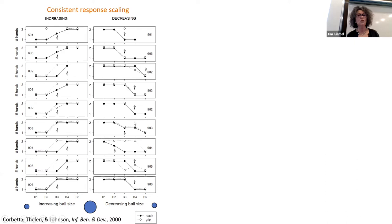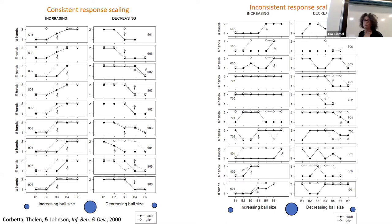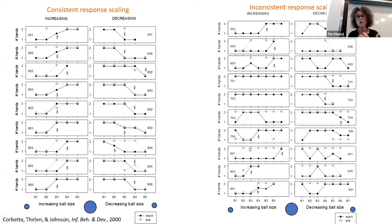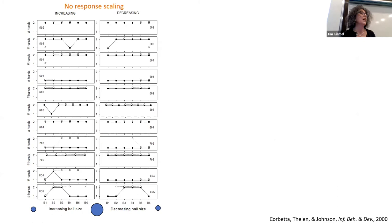Not all infants responded in this scaled manner. We called one group 'inconsistent scalars' because they seemed to adapt the response one way but not the other. The last group were babies who did not scale the response at all — they used a stereotypical response regardless of object size, using either two hands throughout or one hand like subject 601, with no adjustment whatsoever as objects changed in size.